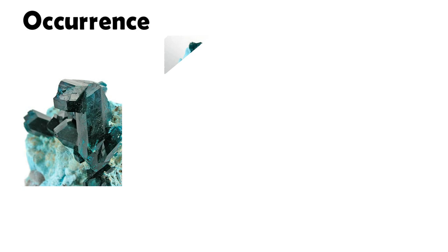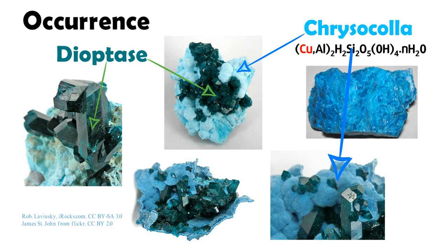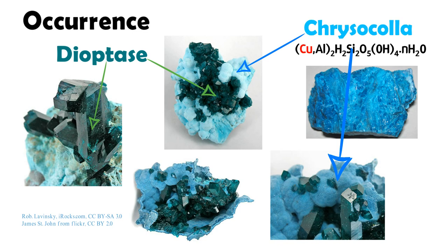Dioptase usually occurs as grains or drusy invasive aggregates. Dioptase is one of the copper-bearing gemstones. Chemically, dioptase is related to chrysocolla. As you can see, it is found in copper deposits in association with chrysocolla.